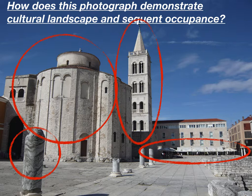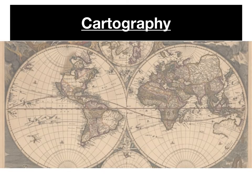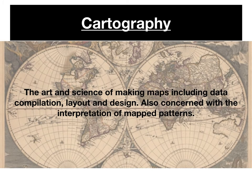So this shows us four different layers of the cultural landscape — the reflection of the culture of that area on the physical landscape: buildings, cafes, shops, et cetera. Next we have cartography. Cartography is the art and science of making maps, including data compilation, layout, and design. It's also concerned with the interpretation of mapped patterns — so everything to do with the creation and interpretation of maps.